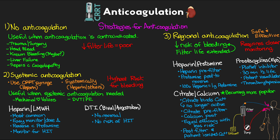To summarize our three anticoagulation strategies: either we don't anticoagulate, we give systemic anticoagulation where we get preserved filter life but also the risk of bleeding because the patient is also anticoagulated, or we use regional anticoagulation where we provide anticoagulation through the filter but then reverse it — with protamine if using heparin, or by replenishing calcium when using citrate — and still get preserved filter life without the systemic risk of bleeding.